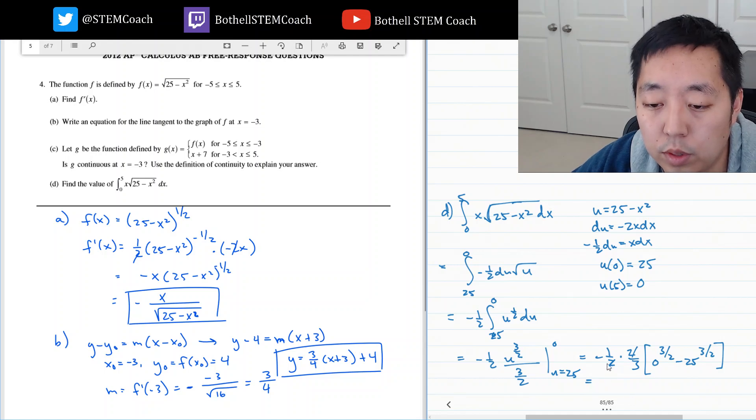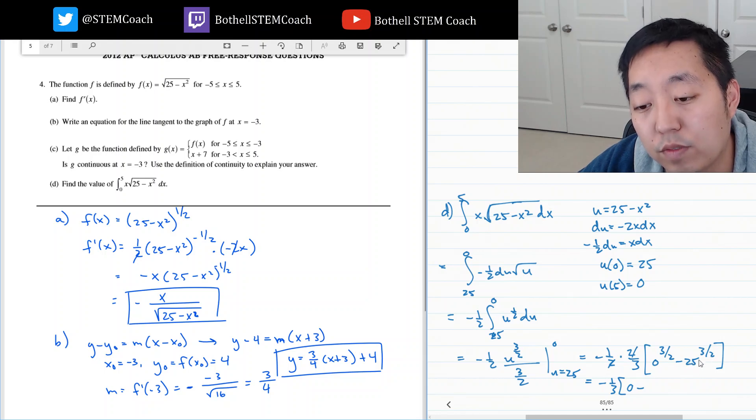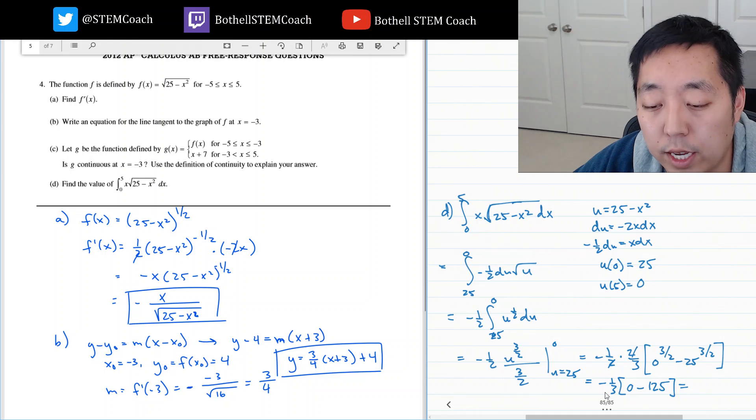And so this is negative 1 third times 0 minus 25, square root of 25 is 5. 5 cubed is 125. So then this is negative 1 third times negative 1 the negatives cancel. So it's 125 over 3.